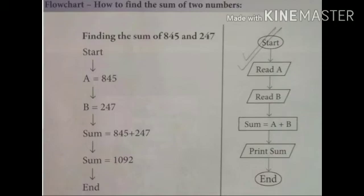After input, processing part will take place. As you all know, processing will take place in rectangular box. In processing rectangular box, we are going to put a formula. That is, sum equals A plus B. As our question is to find the sum of two numbers and we have assumed the two numbers as A and B.